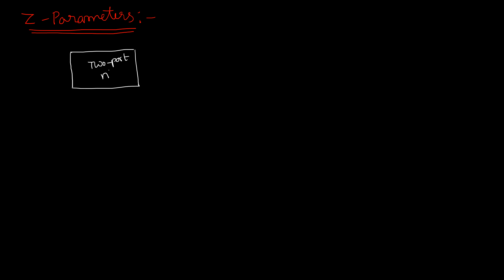Let us start with Z parameters. Z parameters are also called open-circuit parameters. Let us consider a two-port network. We will definitely have two pairs of terminals. Here I1 and V1 are the port 1 variables, and V2 and I2 are the port 2 variables.